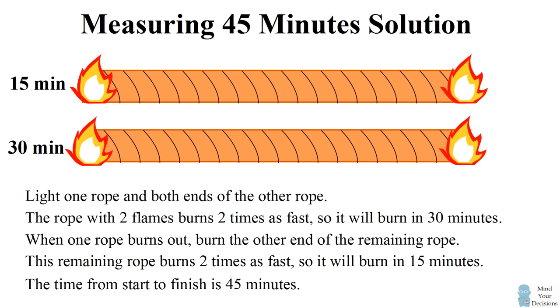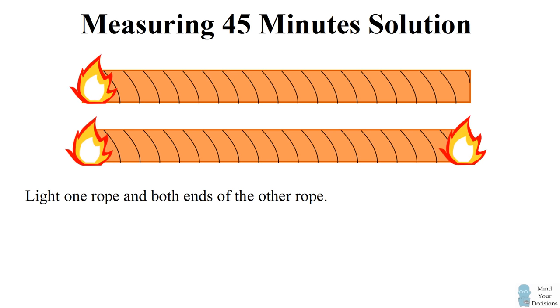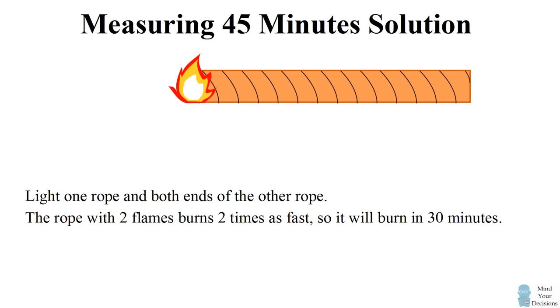So let's see how this works. We start by lighting the ropes in three places. We light one end of one rope and both ends of the other rope. Now we'll let the flames go. The rope which had two flames on it is going to burn two times as fast. So at that point, 30 minutes have elapsed.